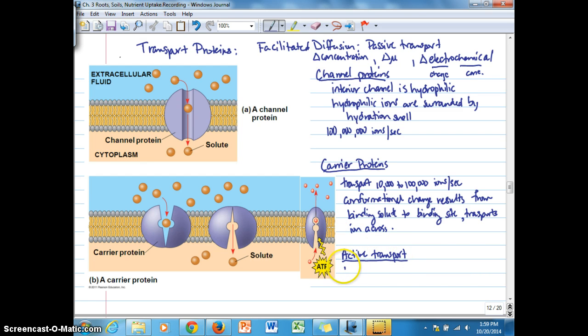One type of active transport that everybody is mostly familiar with is where ATP is used to phosphorylate a carrier protein.